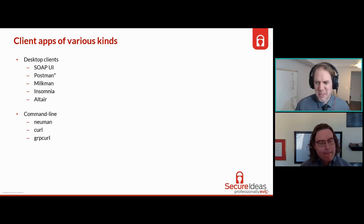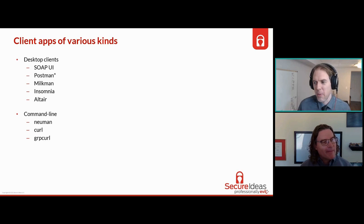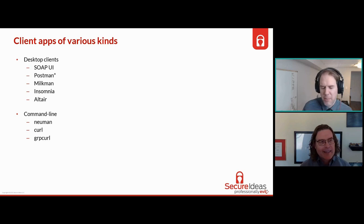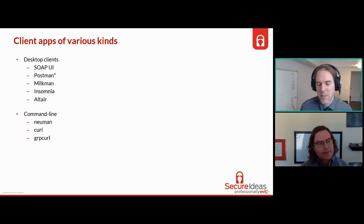SoapUI is proxy aware - you can point past TLS certificate validation, which is helpful, essentially essential if you're trying to push things to your proxy. The only alternative is establishing trust with the CA your interception proxy uses. Postman is on the list more for posterity at this point. Postman has moved towards a model where everything goes to the cloud when you're using it - helping them monetize for developers. They always had sync services, but we didn't use them because we didn't want our stuff going to their cloud.